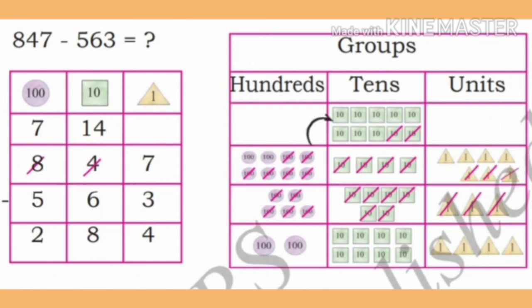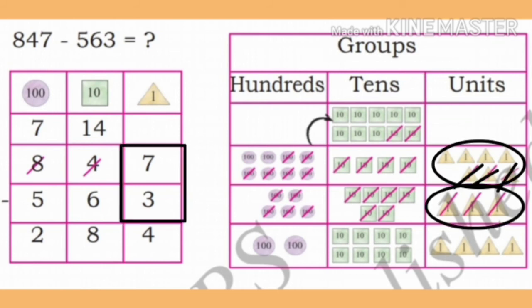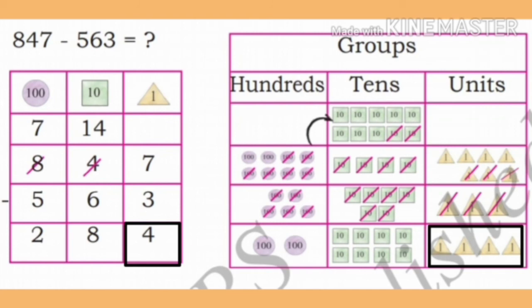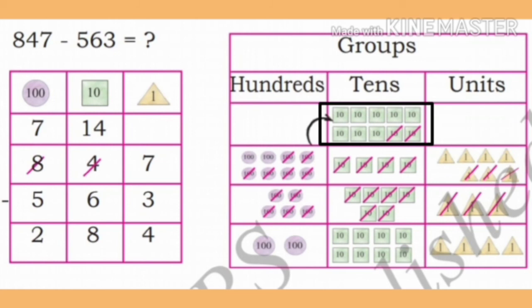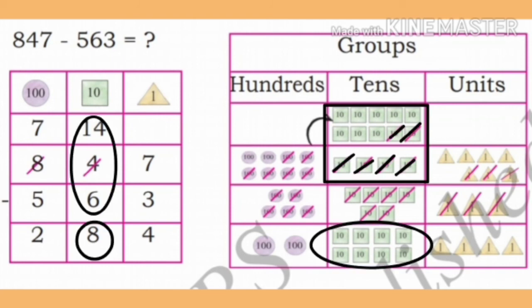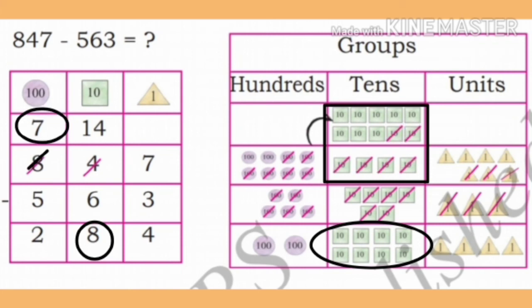First of all, in the Minuend, subtract 3 units from 7 units and write the remaining 4 in the units place. Now in the tens place of the Minuend, we have 4. It is not possible to subtract 6 tens from 4 tens. Therefore, borrow 100 from the hundreds group. 100 has 10 tens. In the tens place, we get 10 plus 4 is 14 tens. On subtracting 6 from 14, we get 8.